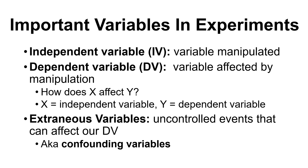Our dependent variable, or DV, is the variable that is affected by the manipulation. Our measurement of the dependent variable will change depending on our manipulations. If we're looking at an antidepressant, we'd measure mood, and we'd hope that people who received a certain dosage would show an increase in mood. Their mood changes depending on the dosage they received — our manipulation to the IV causes a change in the measure of our DV.